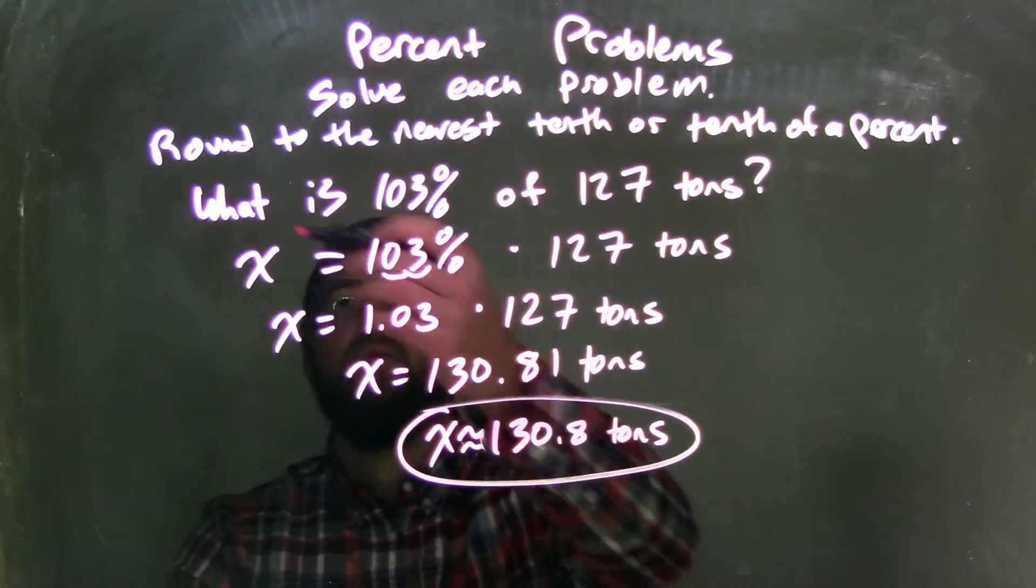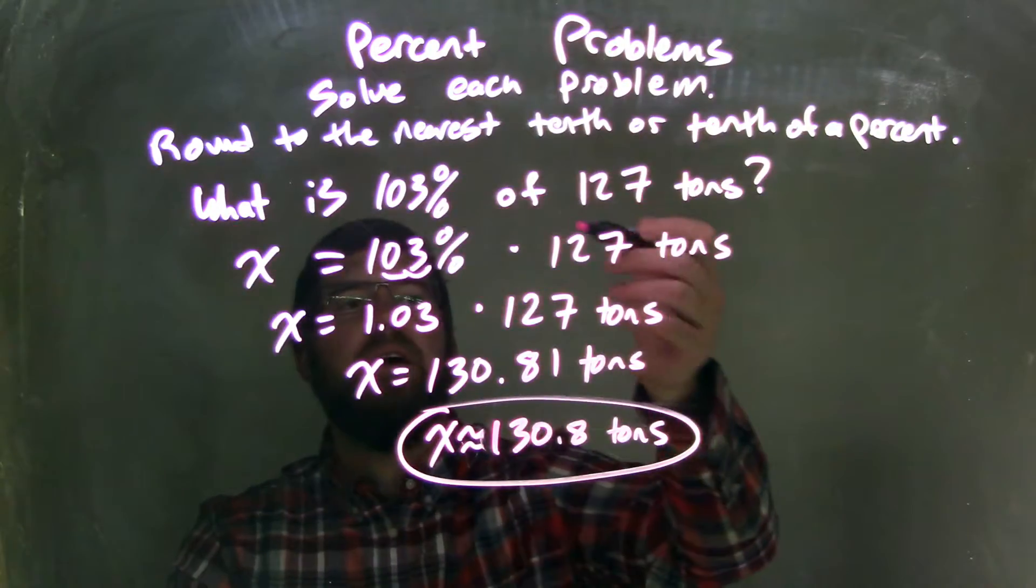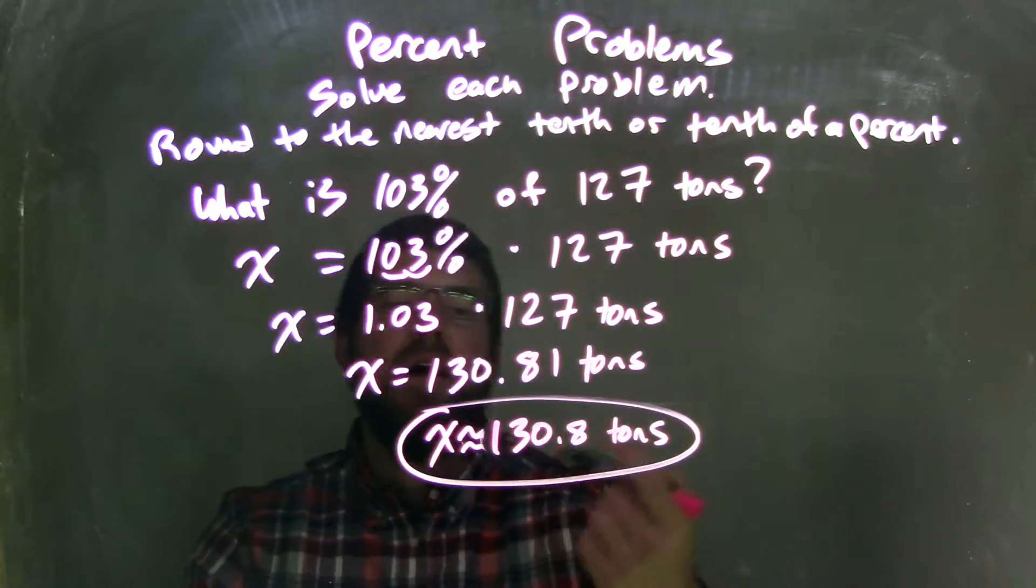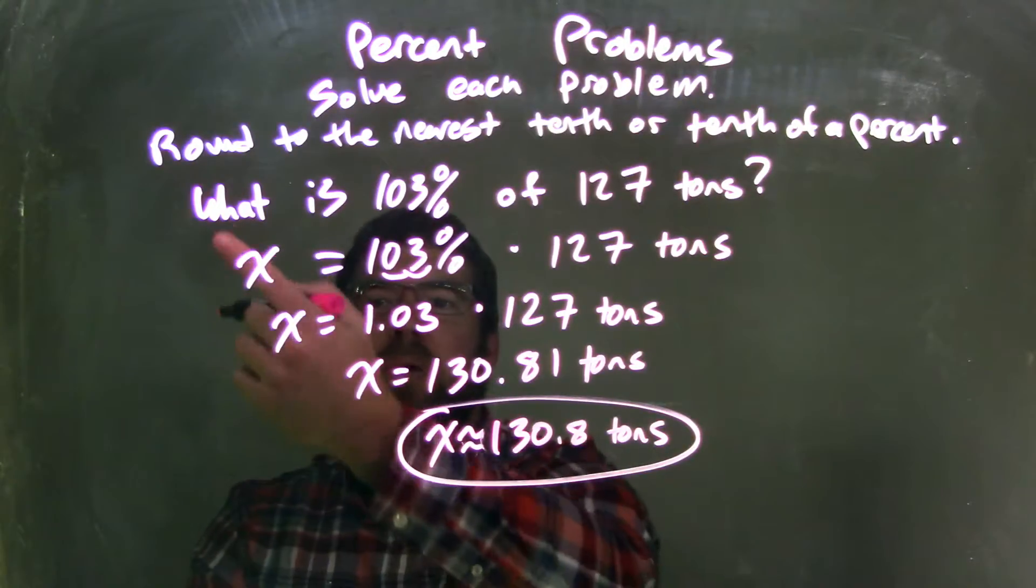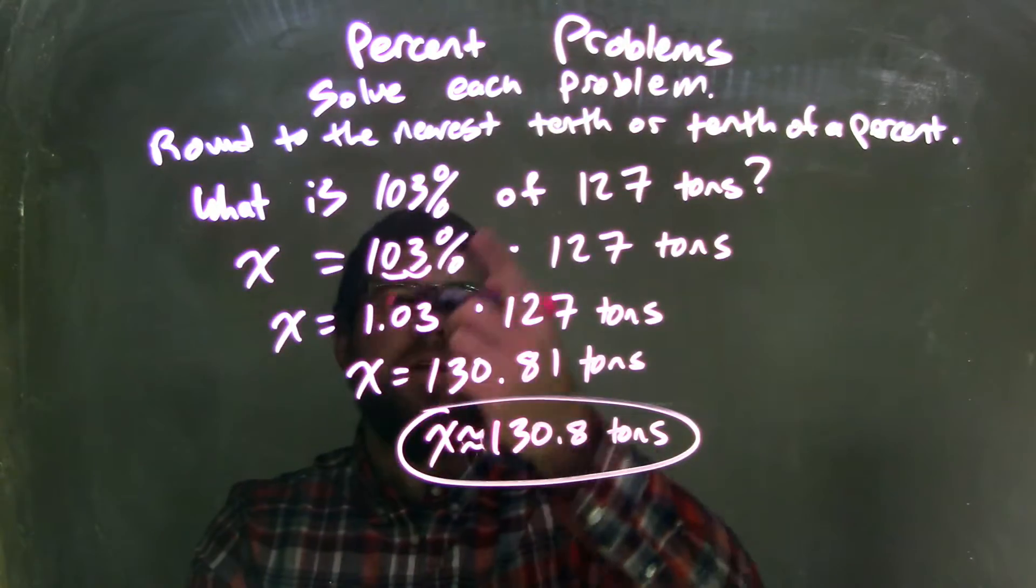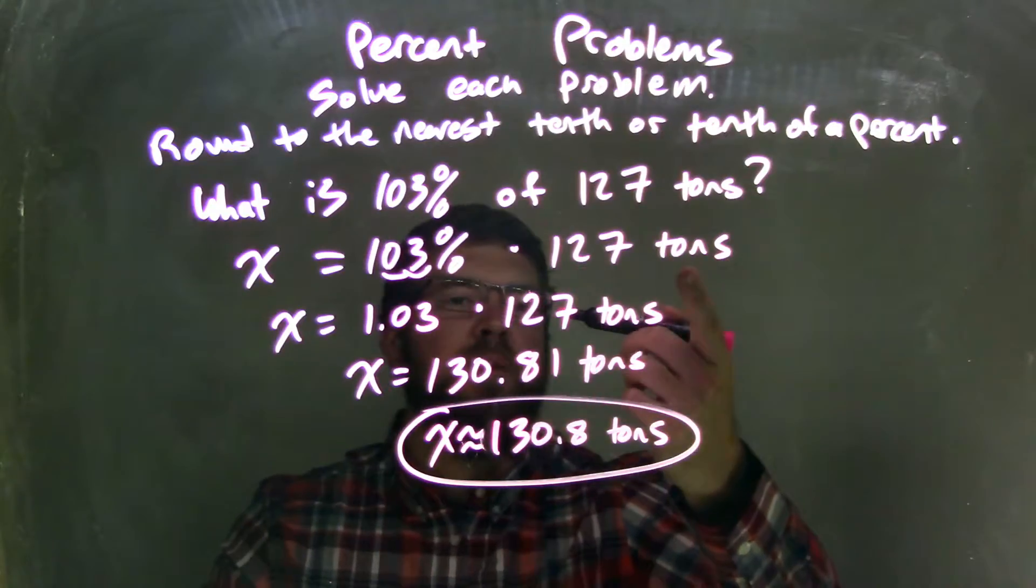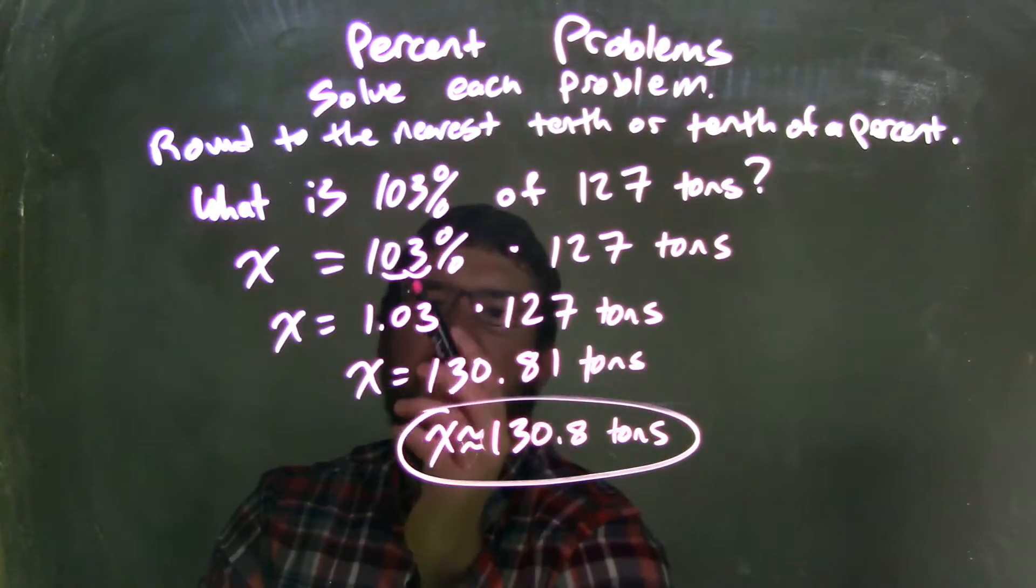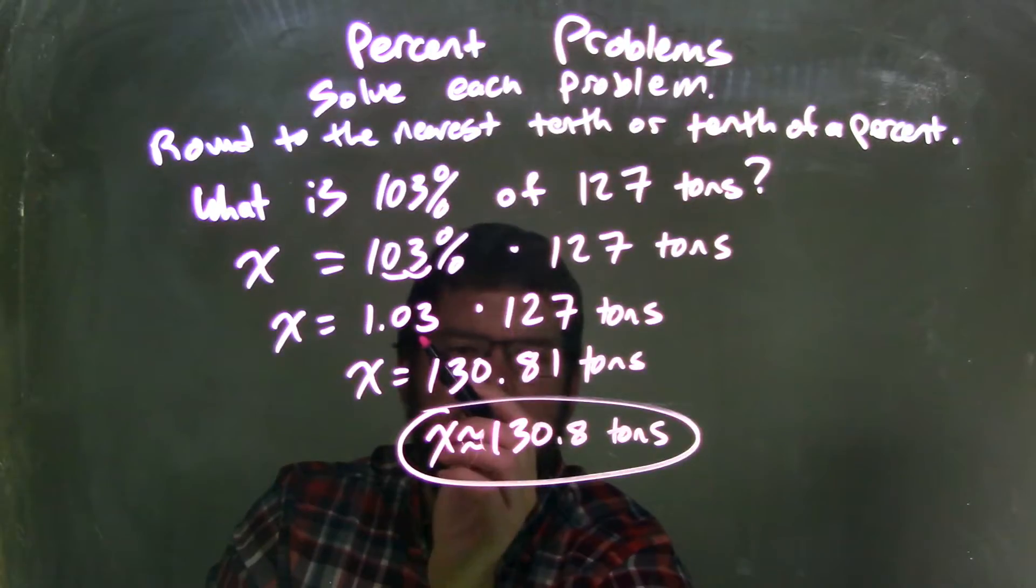So let's recap. We start with the question, what is 103% of 127 tons? I then wrote that as an equation: x equals 103% of 127 tons, where 'of' means multiplication.